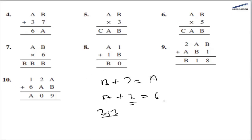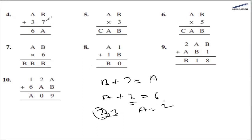Let us check both cases. If a is 2, then b plus 7 equals 2, so b equals 5. If a is 3, then for b plus 7 to work, we would need 6 plus 7 giving 13, which carries 1, making it 73 — but that doesn't satisfy the condition. So a will have value 2 and b will have value 5.